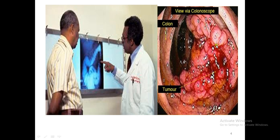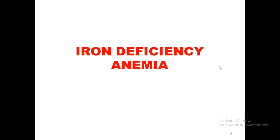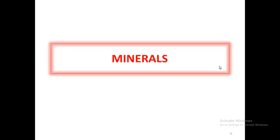Here is another patient — he suffers from a cancerous tumor inside his colon which is bleeding heavily all the time, and the doctor is showing him the picture of this tumor. In his case also you can expect similar findings. Both these cases are said to be suffering from iron deficiency anemia. So let us study today a little bit about minerals.